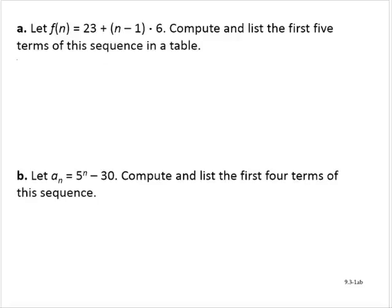Let f of n be equal to 23 plus the quantity n minus 1 times 6. Compute and list the first five terms of the sequence in a table.